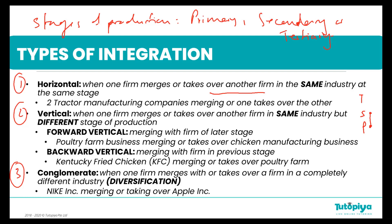Backwards vertical integration means merging with or taking over a firm that is in the previous stage of production. For example, Kentucky Fried Chicken — KFC — merges with or takes over a poultry farm, moving from the tertiary industry all the way back to the primary industry.